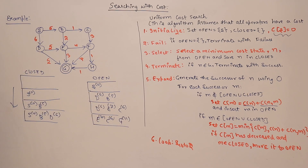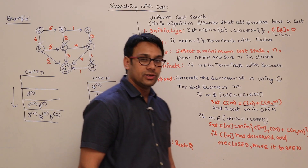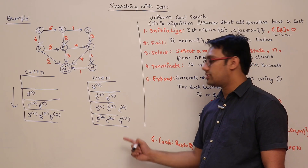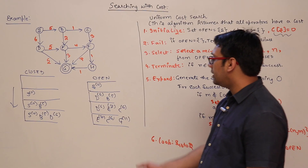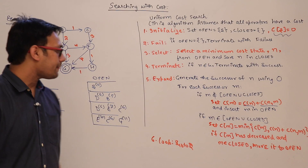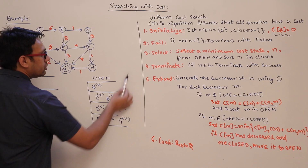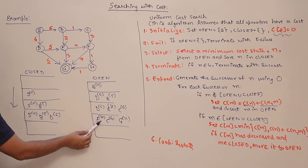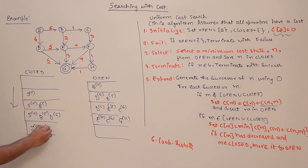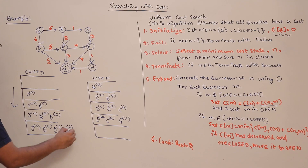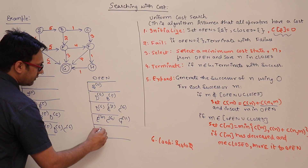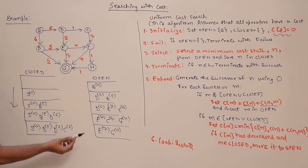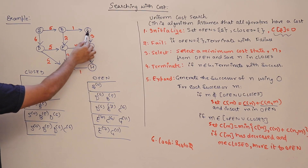G is a successor of D and is inserted into open with cost 6 + 5 = 11. Even though G is a goal state, we do not terminate yet because a better cost for G might be found later. We go back to step 2. Open contains C(6), E(7), G(11). The minimum cost is C(6), so we select C and put it into closed.